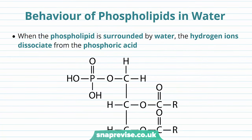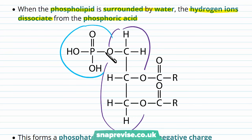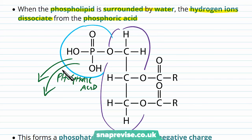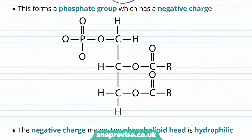Phospholipid molecules behave in a particular way because of their structure. When you have a phospholipid surrounded by water on all sides, the hydrogen ions found in the phosphate group start dissociating from the phosphoric acid. Submerging it in water causes the phosphoric acid to give off hydrogen ions — this is what acids do in general; they donate hydrogen ions. As a result, the phosphate group loses those hydrogens and gains a negative charge.